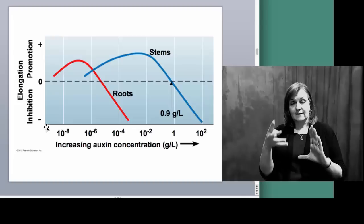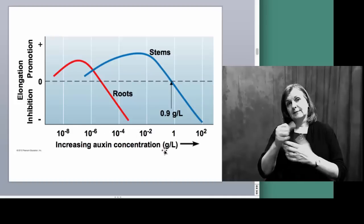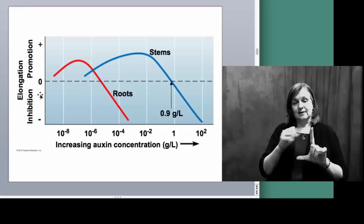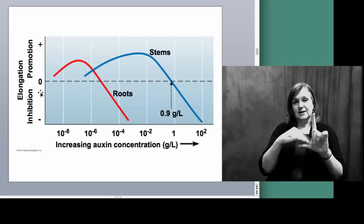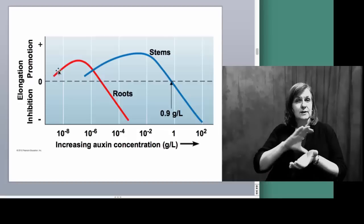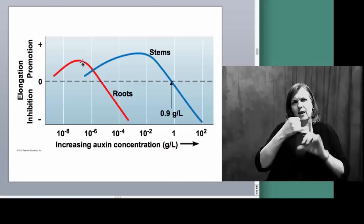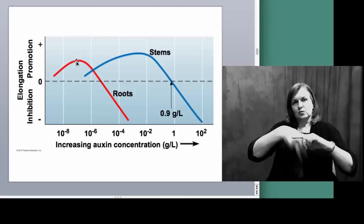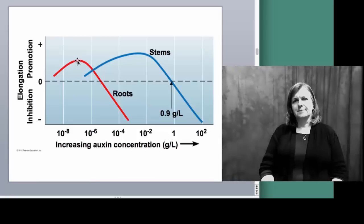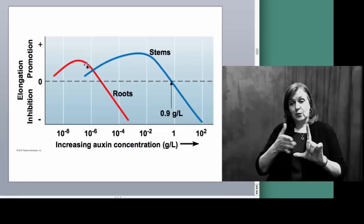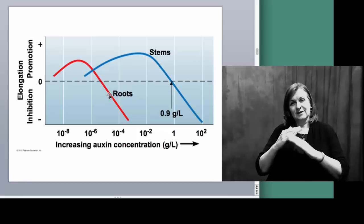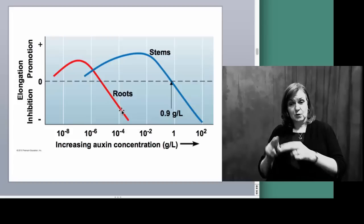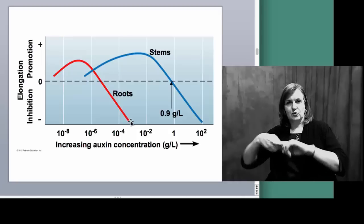When we look at this figure, we have this increase in concentration in grams per liter of auxin, and we also want to look at the two scales on the y-axis: promotion and inhibition. If you have the perfect concentration of auxin — in the case of our root line, about 10 to the minus 7th grams per liter — it's the perfect concentration to promote root growth. If we go beyond that, into about 10 to the minus 5, we actually go into inhibition. Increasing to 10 to the minus 4 causes significant inhibition of the roots.